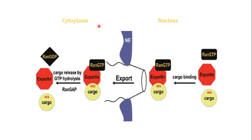To summarize: in the nucleus, the cargo has a nuclear export signal, Ran-GTP binds to the exportin increasing its affinity for the cargo, forming a trimeric complex. This complex moves from the nucleus into the cytoplasm utilizing the HEAT repeats of the exportin interacting with FG sequences of the nuclear pore complex. In the cytoplasm, Ran-GAP converts Ran-GTP to Ran-GDP, causing the exportin to lose affinity for the cargo, releasing it. Ran-GDP is transported back via NTF2, converted back to Ran-GTP by GEF, and the exportin returns to the nucleus for another cycle.